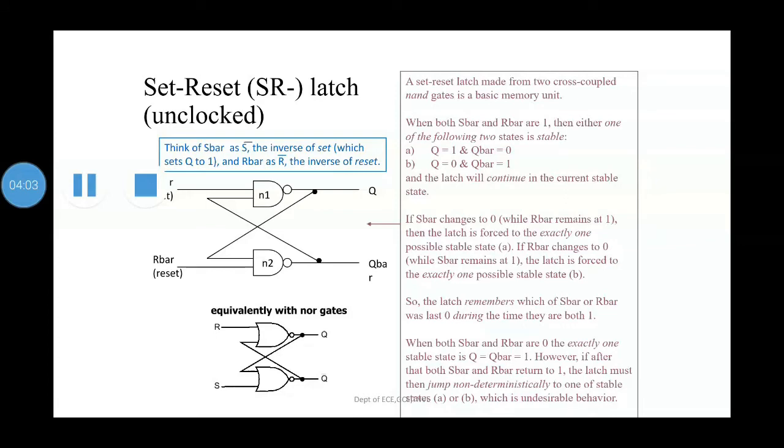If you see about the set-reset latch, that is the unclocked one. Here we are having S bar and R bar. A set-reset latch made from two cross-coupled NAND gates is a basic memory unit. With both S bar and R bar at 1, then either one of the following two states is stable: Q equals 1 and Q bar equals 0, or Q equals 0 and Q bar equals 1. The latch will continue in the current stable state. Now if S bar changes to 0 while R bar remains at 1, then the latch is forced to the exactly one possible state A.